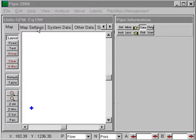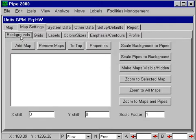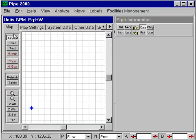In this case, we can go into map settings and either choose backgrounds and load in a background map, or choose grids and turn on grids. I'll illustrate this by turning on 100-foot grid lines, and then we go back to the map.